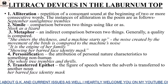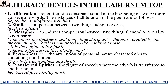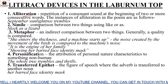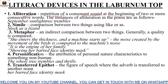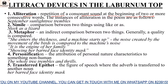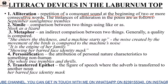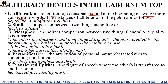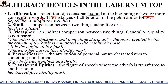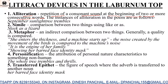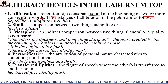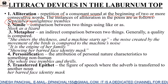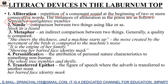Now let's talk about the literary devices used in this poem. The first is alliteration, which means repetition of a consonant sound at the beginning of two or more consecutive words. For example, 'September sunlight' — here the 'S' sound is repeated at the beginning of both words.